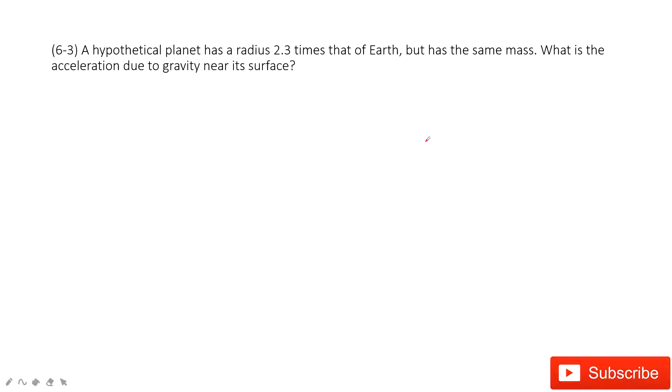In this one, we need to find acceleration due to gravity on just a fake planet. This planet is just we assume it exists. It has a radius 2.3 times that of Earth and the same mass. So how can we do that?